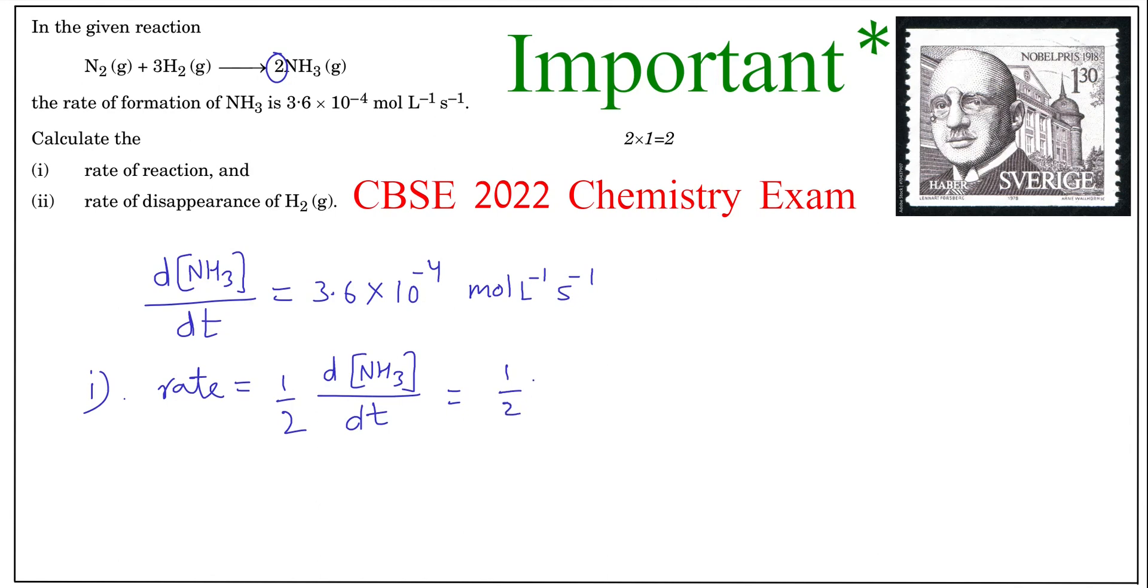So let's put the value: 1 by 2 into d[NH3] upon dT is given as 3.6 into 10 raised to the power minus 4. And if you simplify this, then you will get 1.8 into 10 raised to the power minus 4 mole per liter per second. And this is your rate of the reaction.